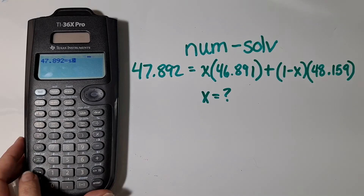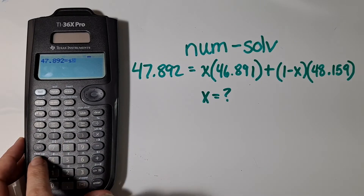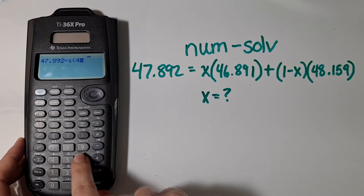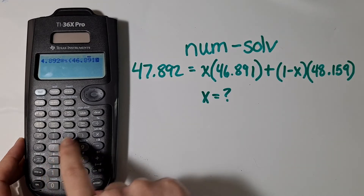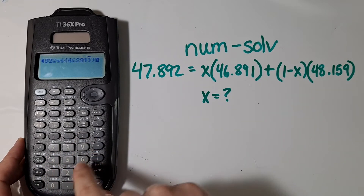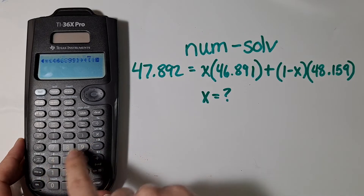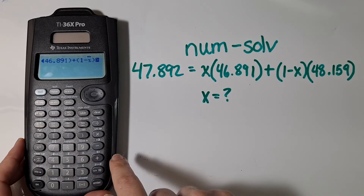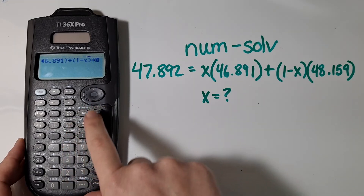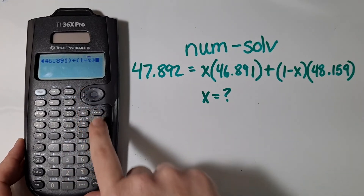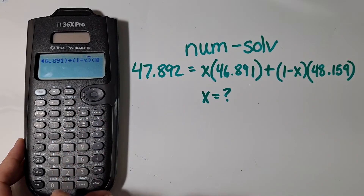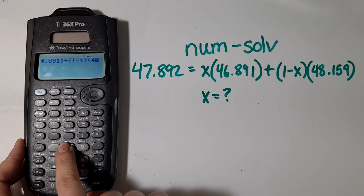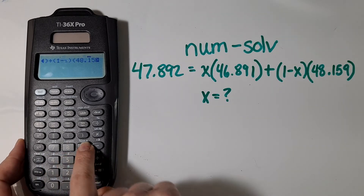If you want to use a different letter, just use x — it's easier. Then you go 46.891, and then type in 1 minus x. That's multiplied by — you don't even need to write the multiply, or you can use parentheses. And that is 48.159.